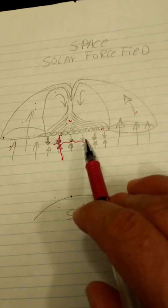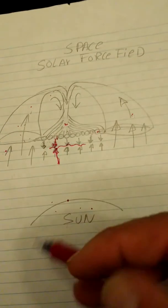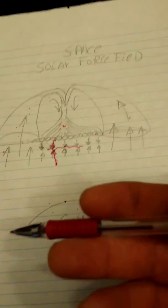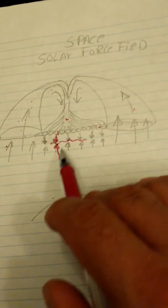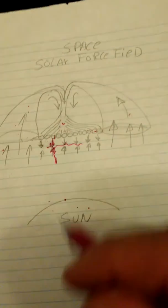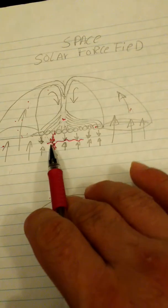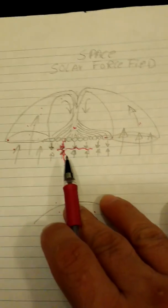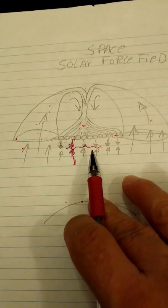But even then, you cannot get too close to the sun, but it allows you to get closer than would normally be possible. This is another form of force field. Sunlight against sunlight. It could be used in different kinds of technologies on Earth as well as in space.